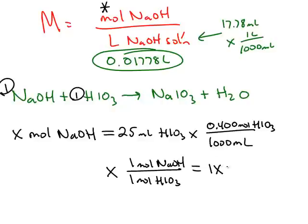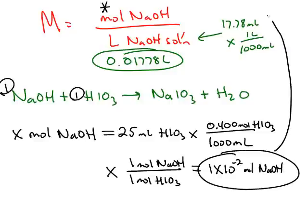This gives us 1 times 10 to the negative 2 moles of sodium hydroxide. And that is the numerator that we need.